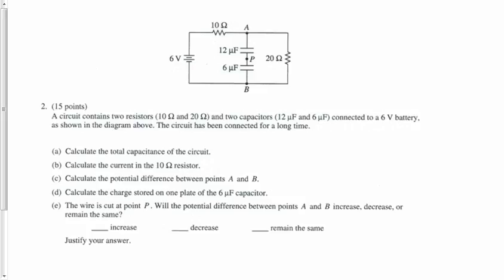Okay, there's a circuit. It has 6 volts, a 10-ohm resistor and a 20-ohm resistor, and across branch A-B there are two capacitors.